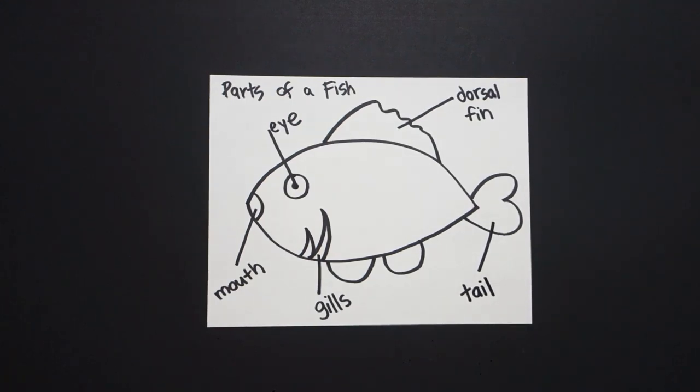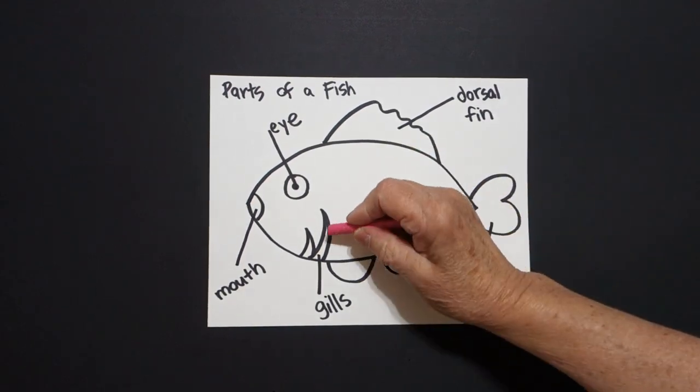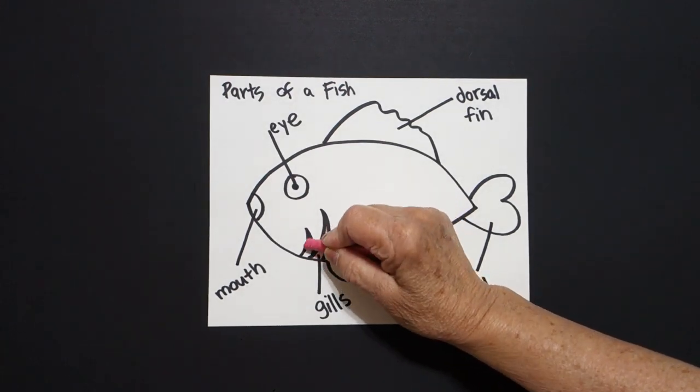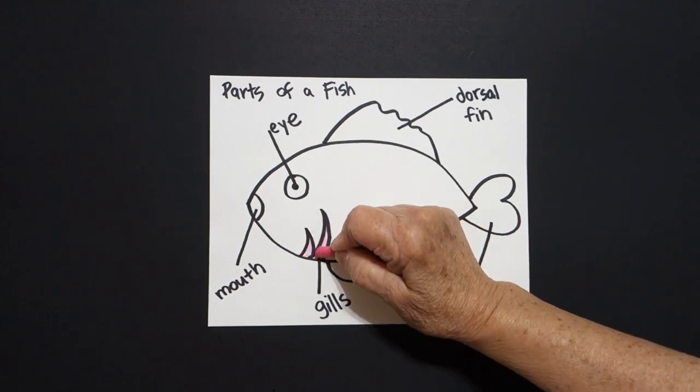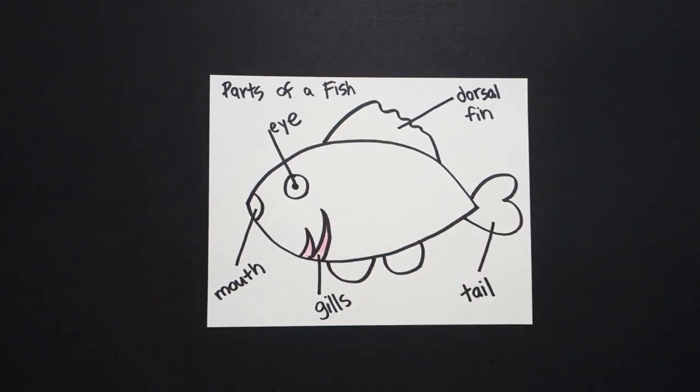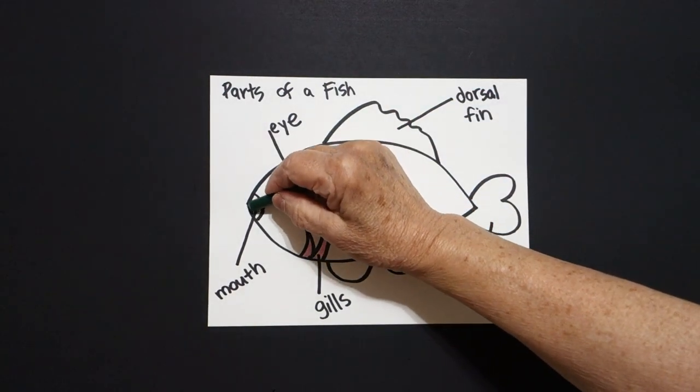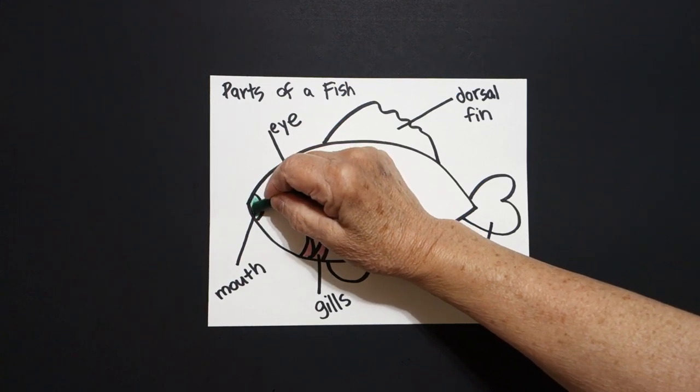Okay, let's see how we're going to color this in. Okay, the first thing I'm going to do is I'm going to take pink and I'm going to color in my gills. And this is how my fish can breathe. Then I'm going to take my regular green and I'm going to color in the mouth. This is how my fish eats.